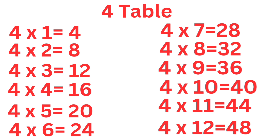Four fours are sixteen. Four fives are twenty. Four sixes are twenty-four. Four sevens are twenty-eight. Four eights are thirty-two.